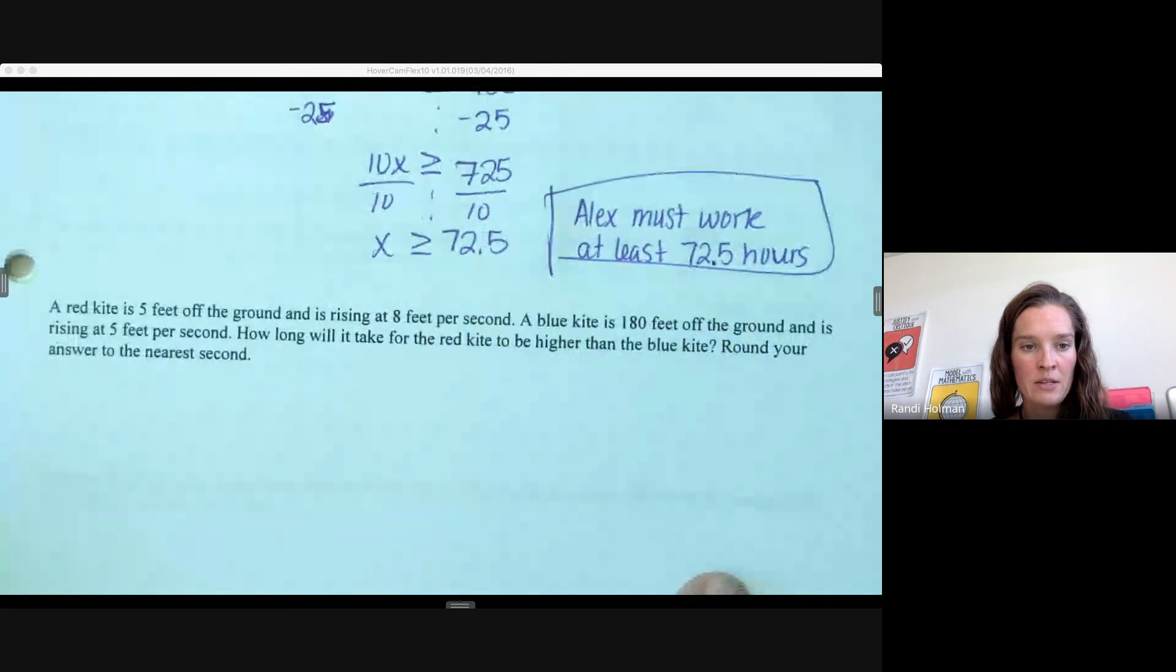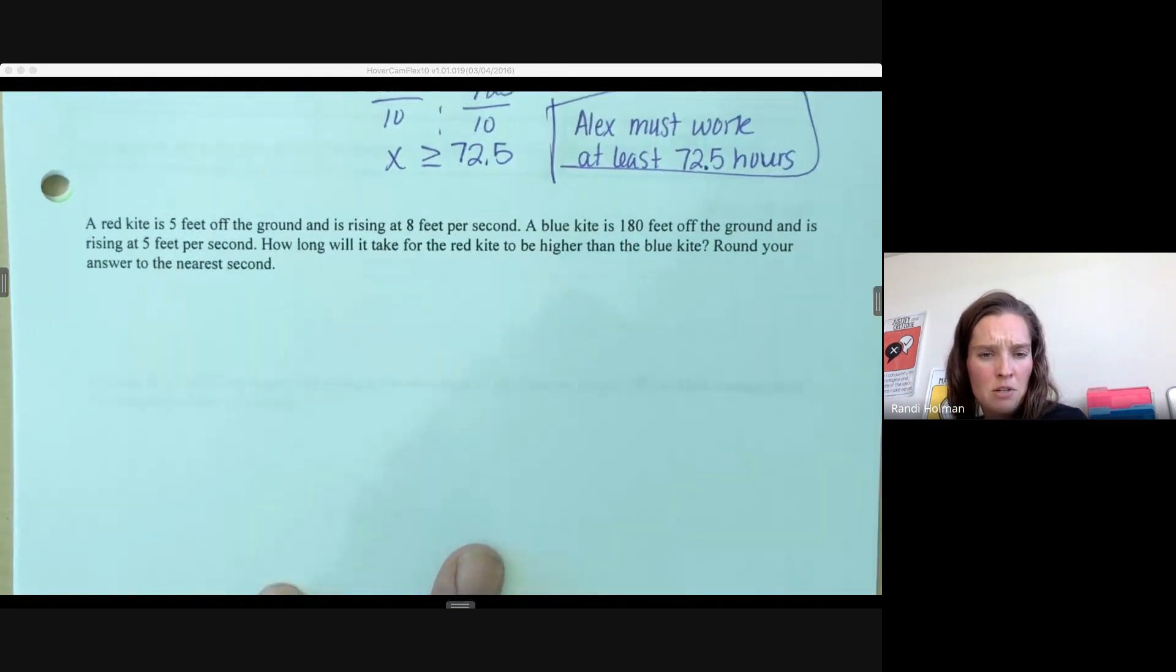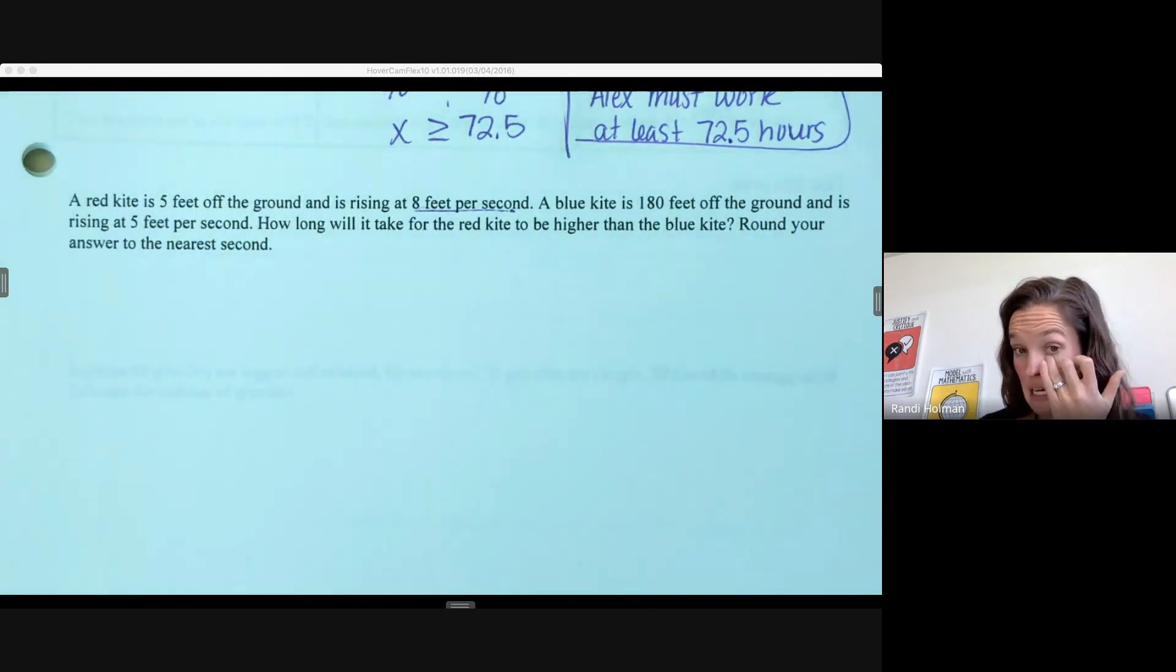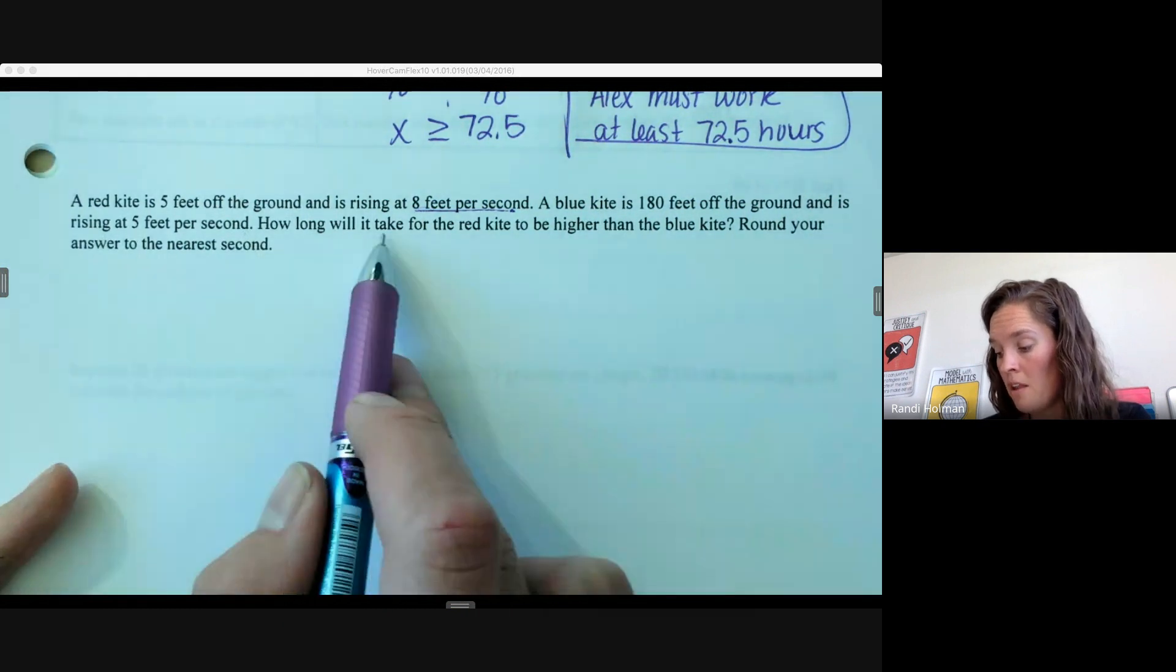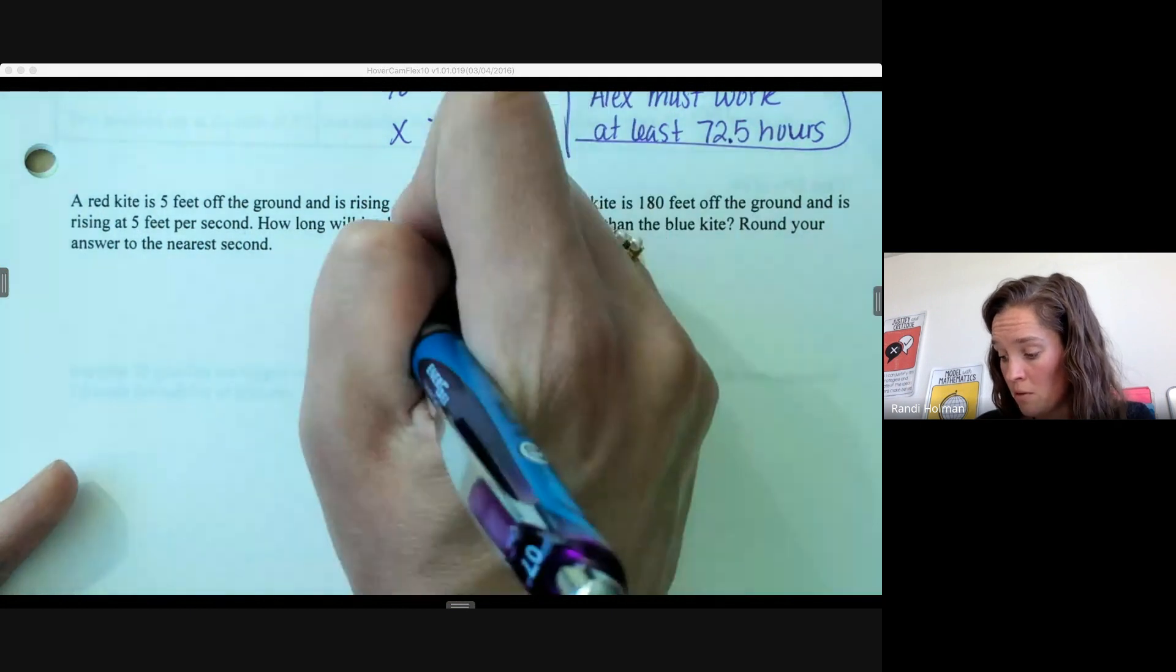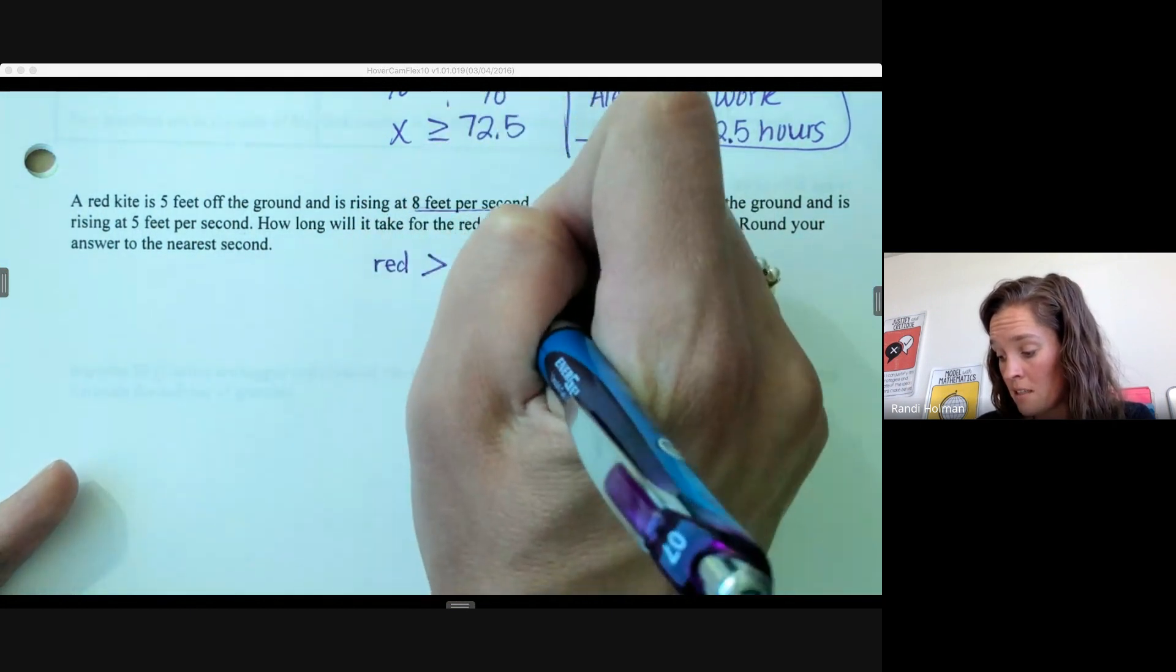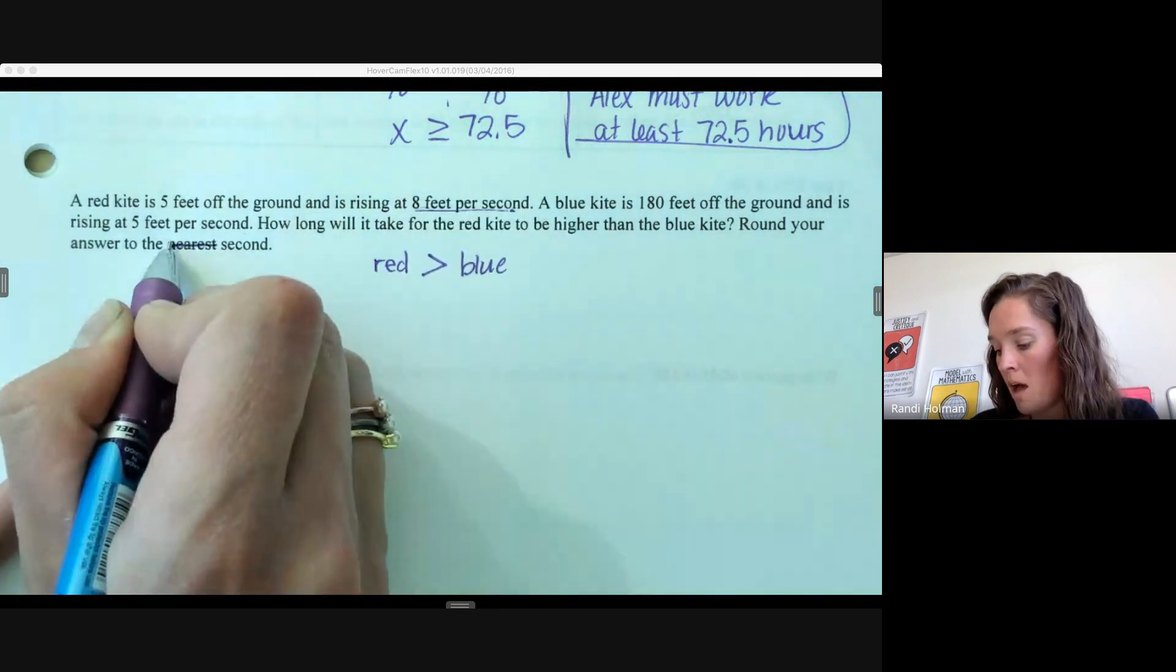Let's try another one. A red kite is 5 feet off the ground and rising at 8 feet per second. A blue kite is 180 feet off the ground and is rising at 5 feet per second. How long will it take the red kite to be higher than the blue kite? We want the red kite to be higher than the blue kite, which means the red's height is larger than the blue's height. It says round your answer to the nearest second—I'm just going to cross off 'nearest' here.